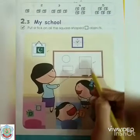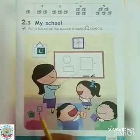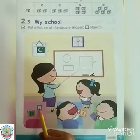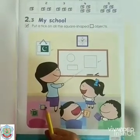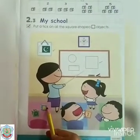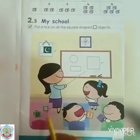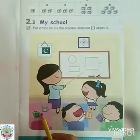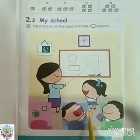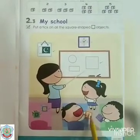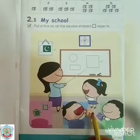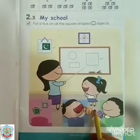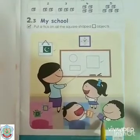These cubes are also in the shape of a square — put a tick on them. This one is also in the shape of a square — put a tick on it. And the dice is also in the shape of a square — put a tick.